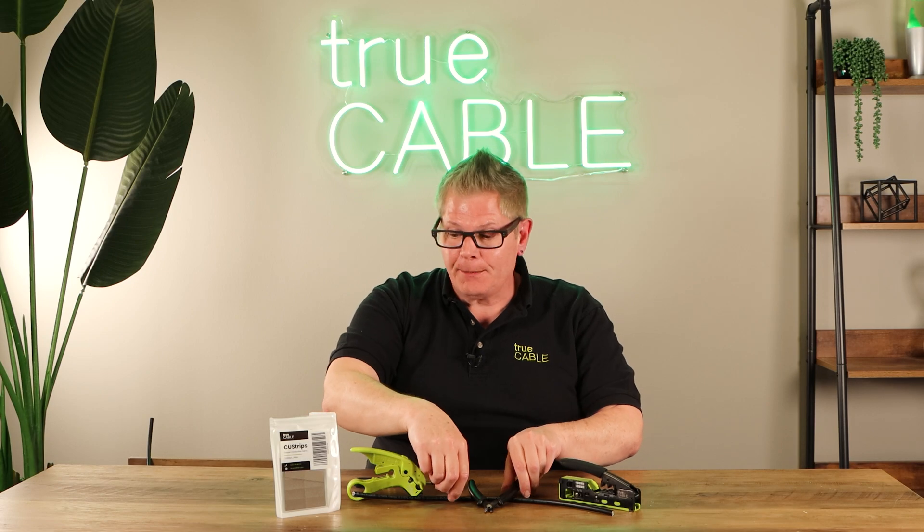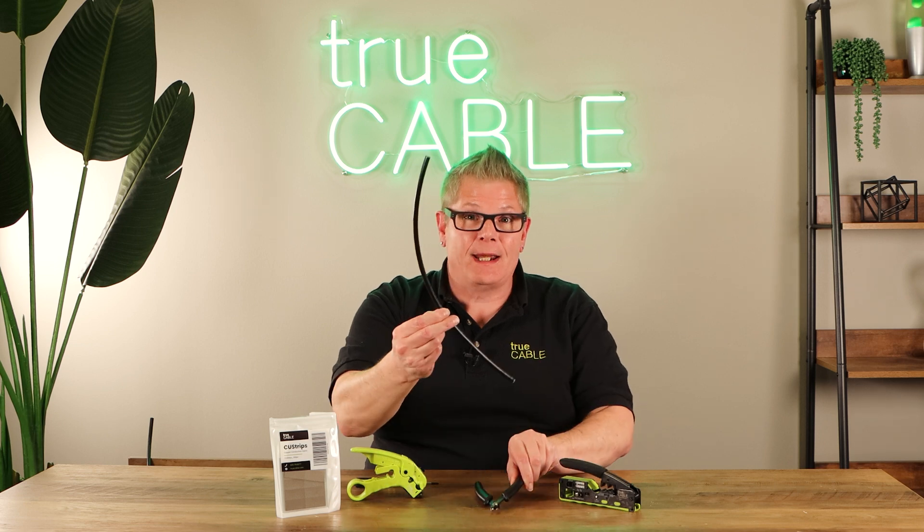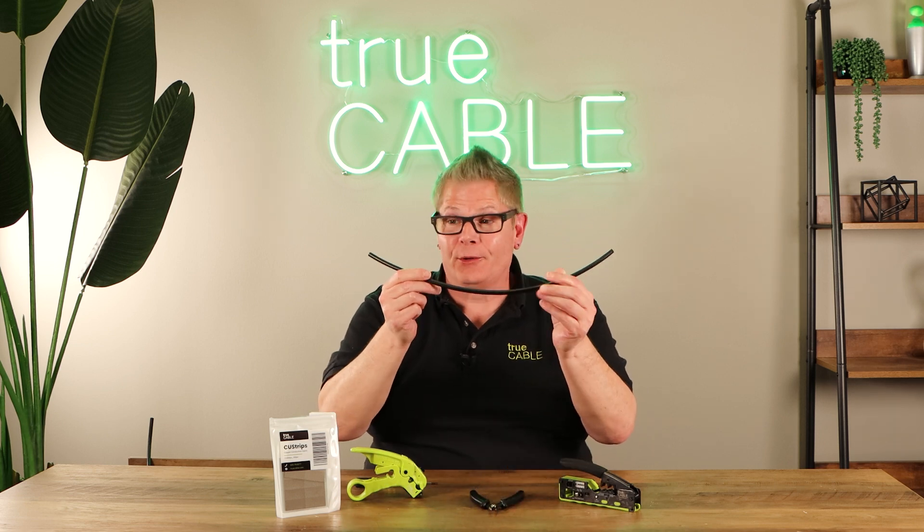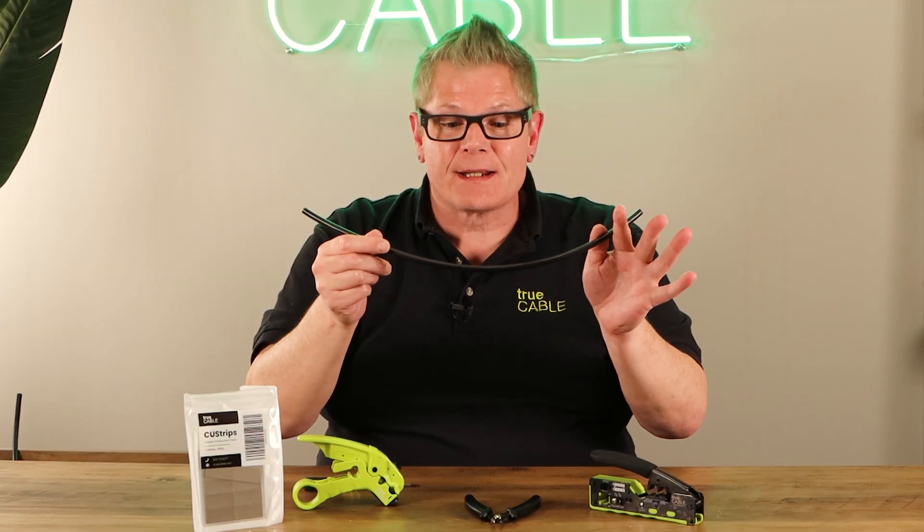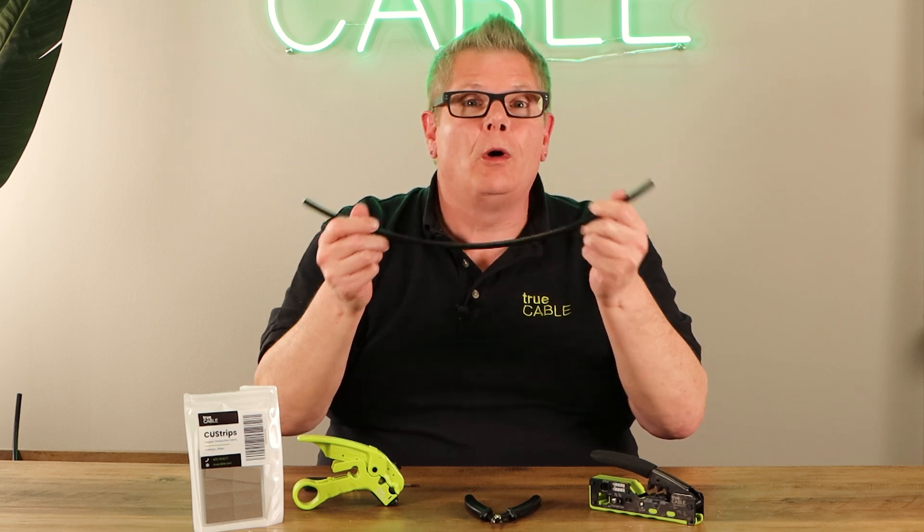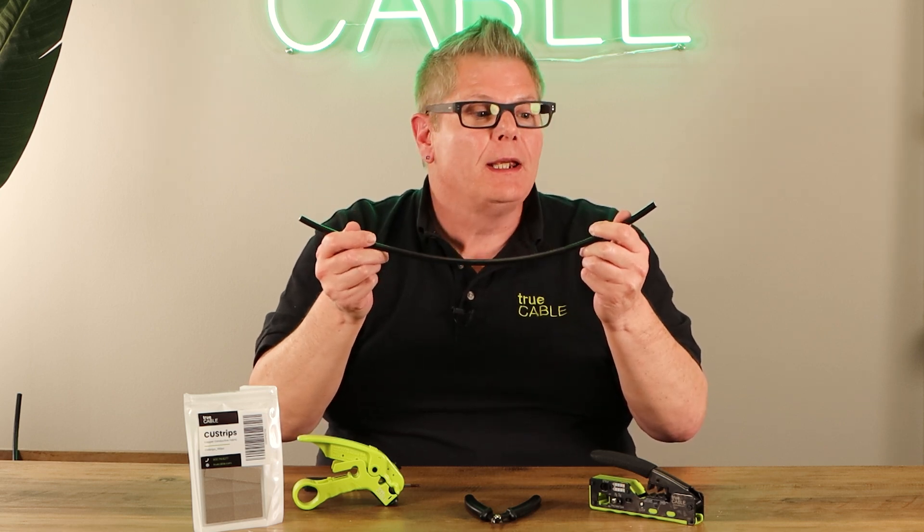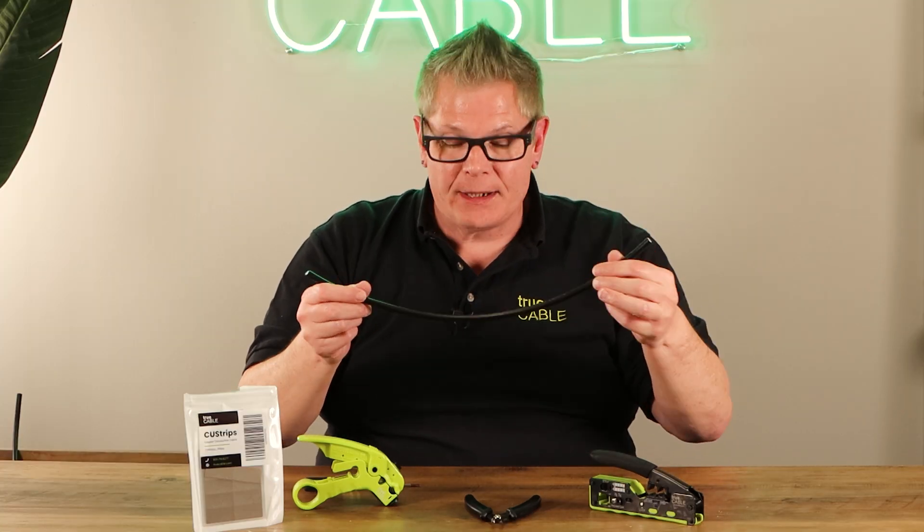In this case we're going to be terminating category 6a shielded direct burial Ethernet. Difficulty wise this is probably the top difficult one to terminate in our entire line of cable. It's also very similar in regards to how you terminate cat 6 shielded direct burial and in fact this video pretty well applies to any of our category 6 or 6a shielded cable direct burial or not.